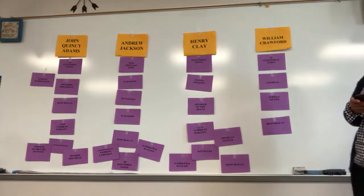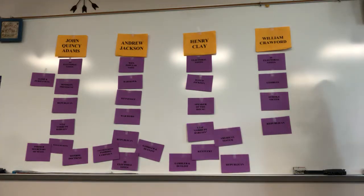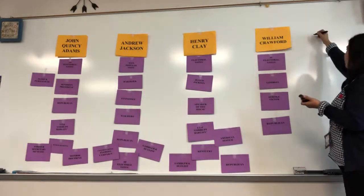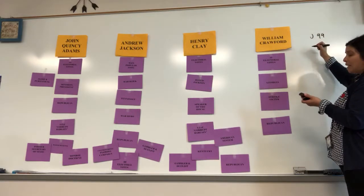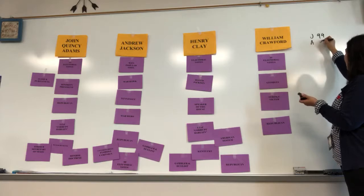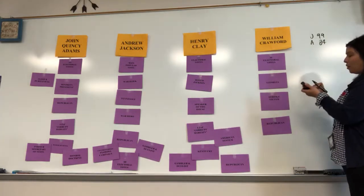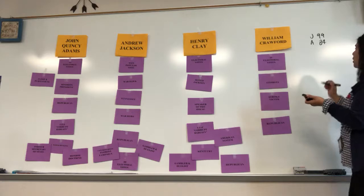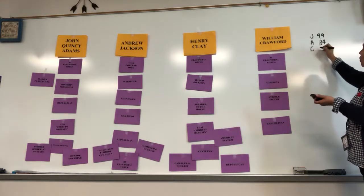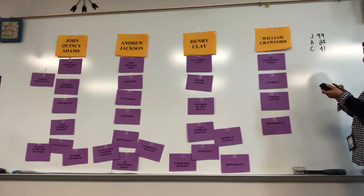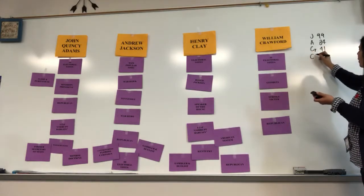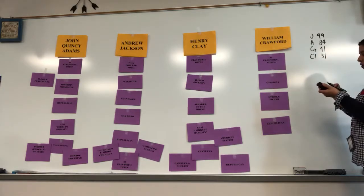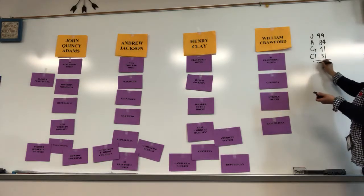Let's look at our Electoral College numbers. Who got the most votes? Jackson — he got 99. Who got the next most? Adams with 84. That gives us 183. Crawford got 41, and then Clay got 37. When I add all those numbers together, that gives me 261.